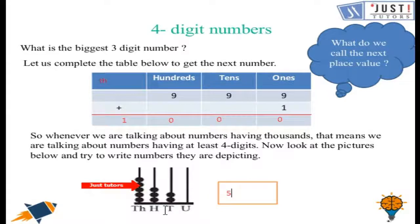In the hundreds column, it shows 3 beads. So 3 at the hundreds column. And then it has 2 beads at the tens column. And it has no beads in the units column. So in the units column, we will put a 0. So the answer for this question is 5320.